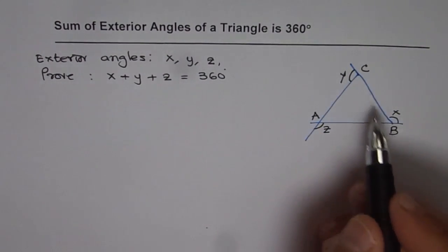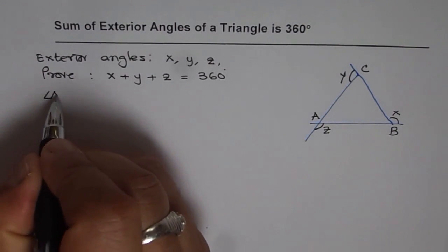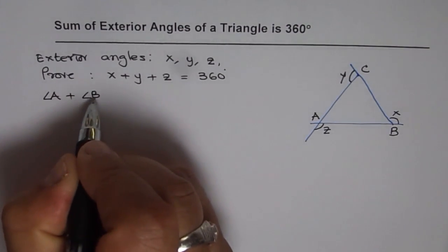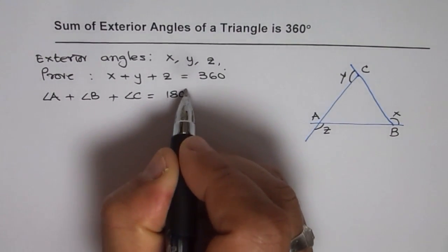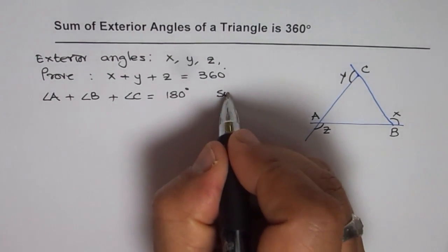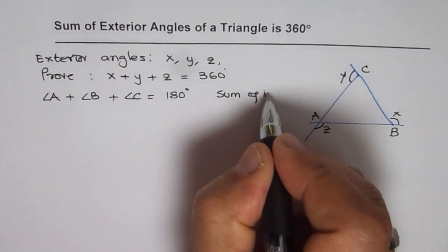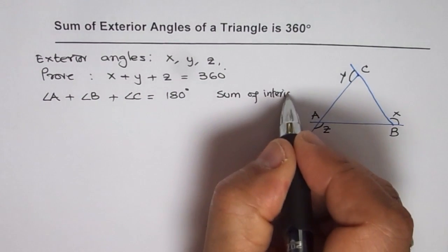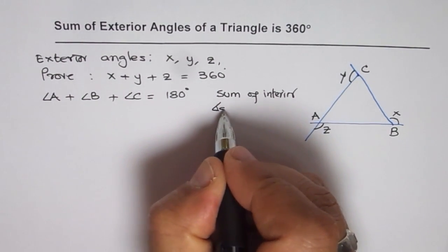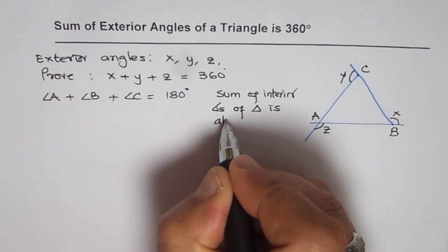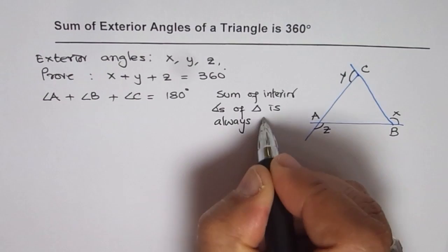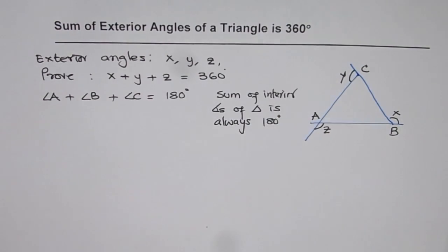Now since we have a triangle ABC, we know angle A plus angle B plus angle C is equal to 180 degrees. That is the sum of interior angles of a triangle is always 180 degrees. That is what we know.